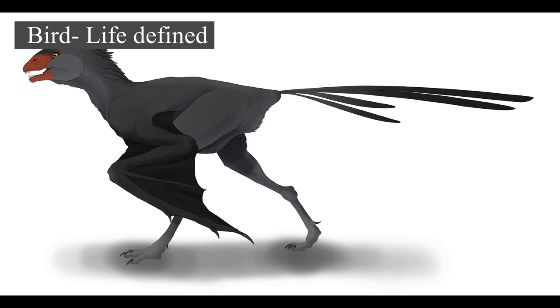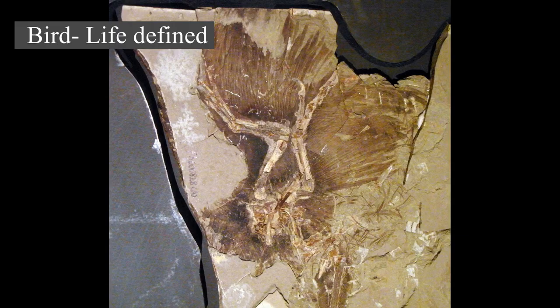Wings, which are modified forelimbs, gave birds the ability to fly, although further evolution has led to the loss of flight in some birds, including ratites, penguins, and diverse endemic island species. The digestive and respiratory systems of birds are also uniquely adapted for flight. Some bird species of aquatic environments, particularly seabirds and some water birds, have further evolved for swimming.